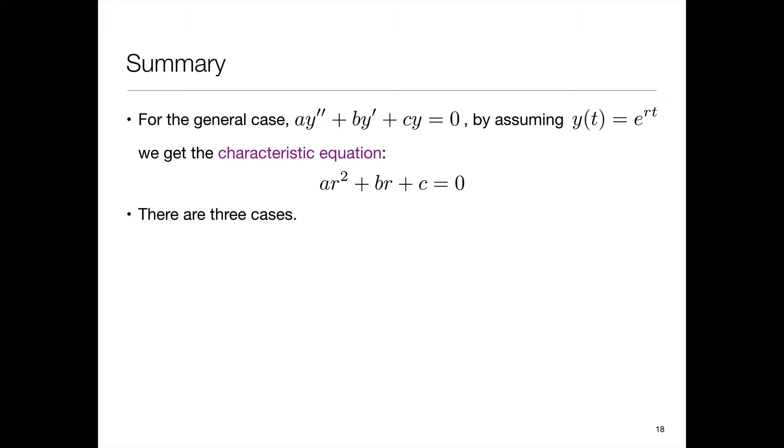So we get three cases for the solutions to this equation. It's possible that we get two distinct real roots and that happens when b squared minus 4ac is positive.